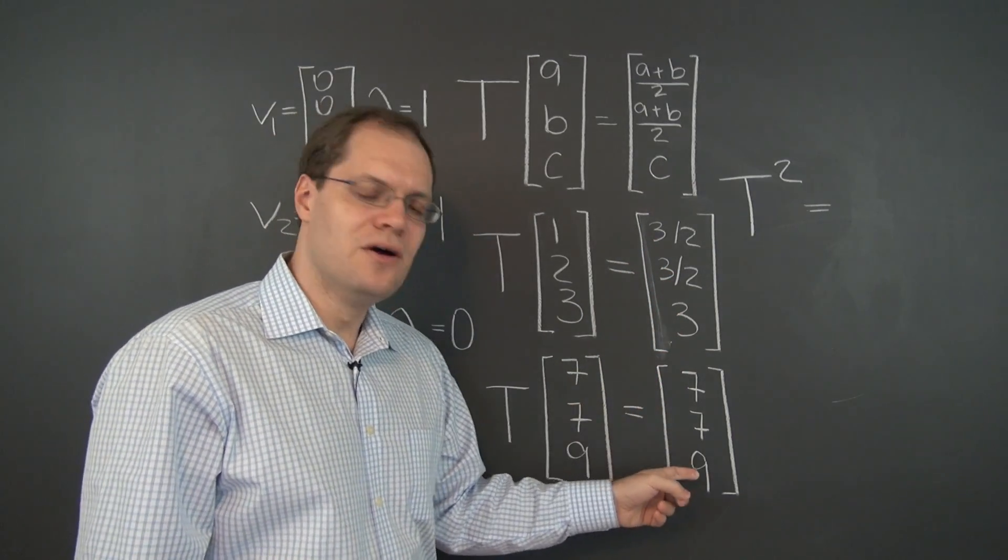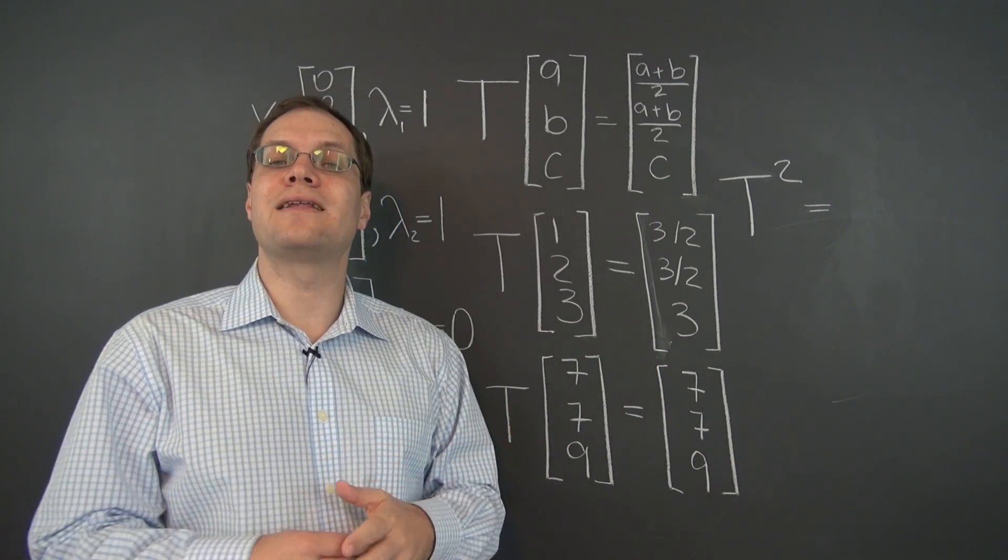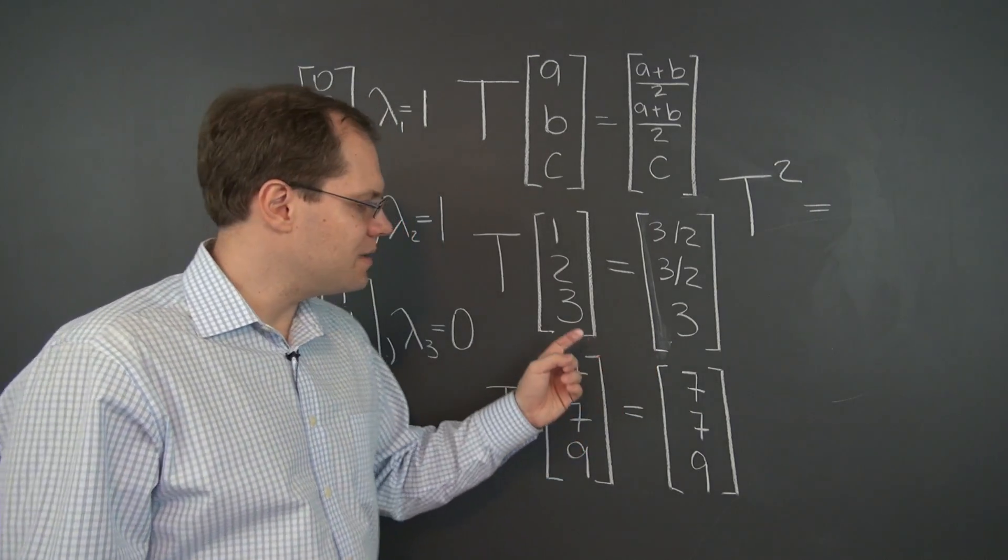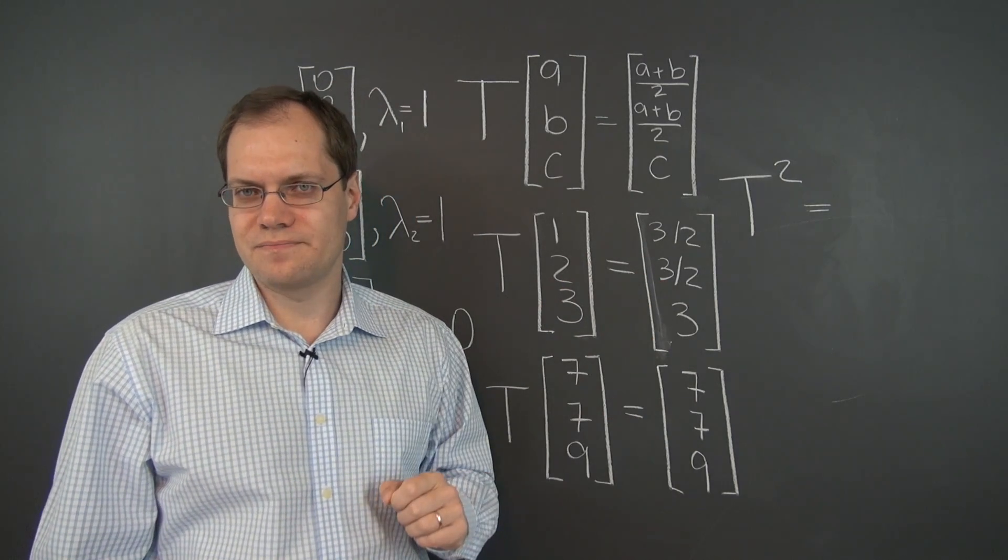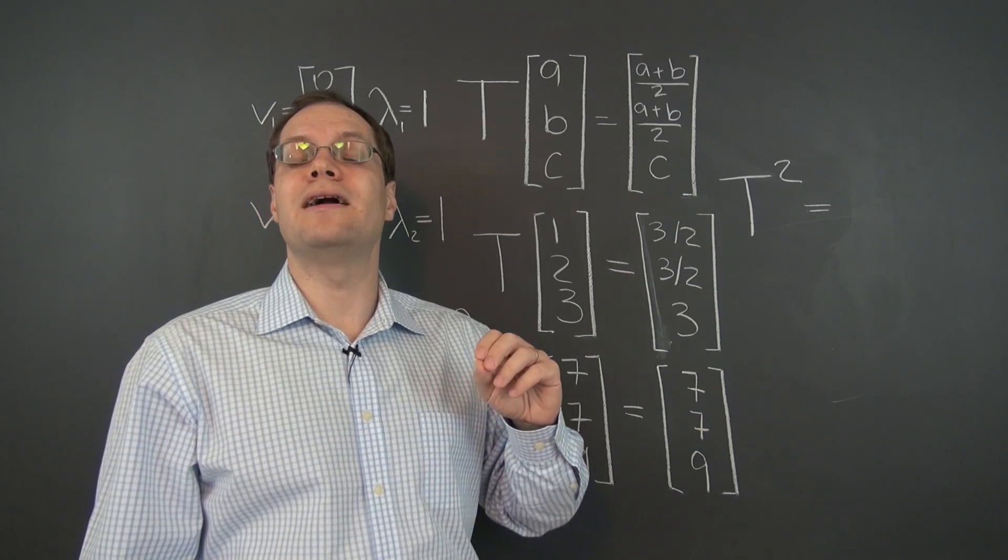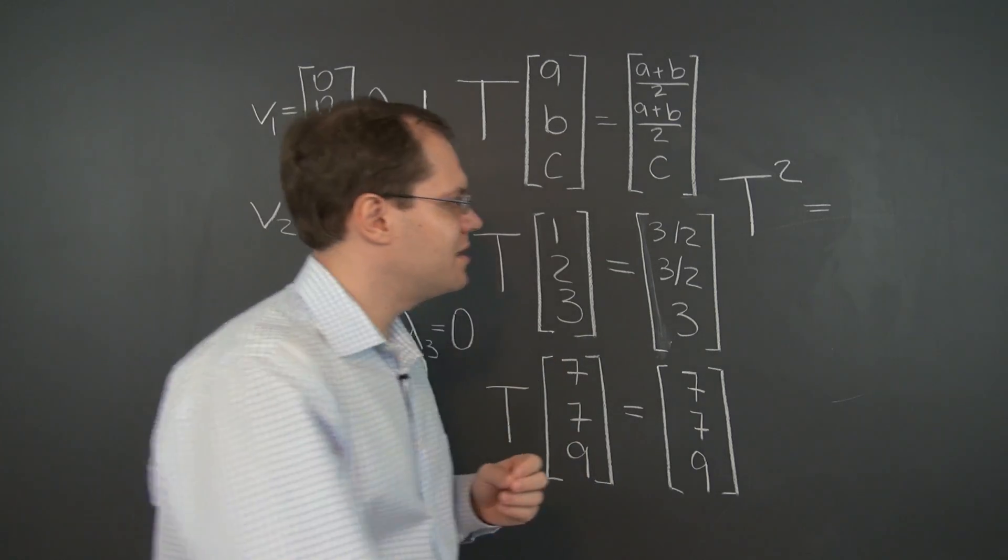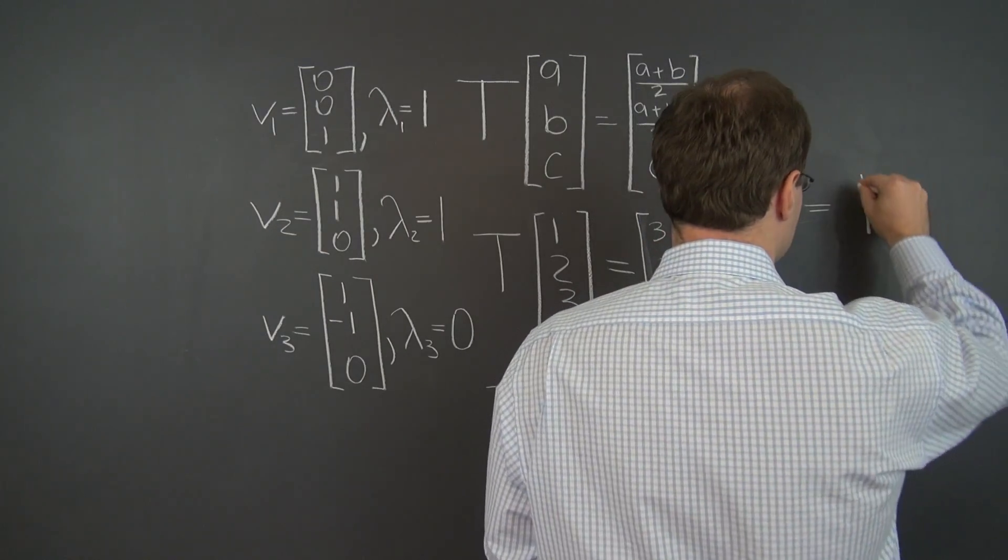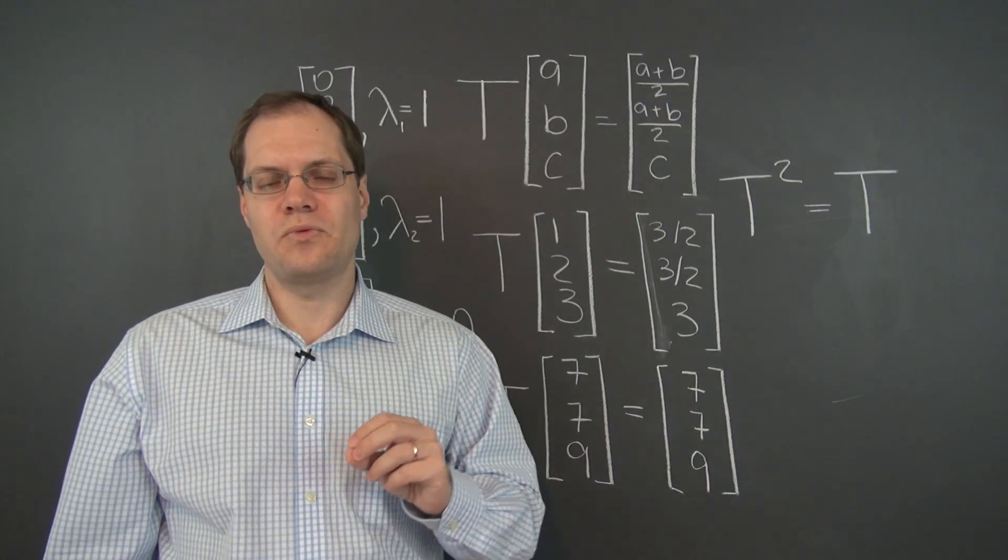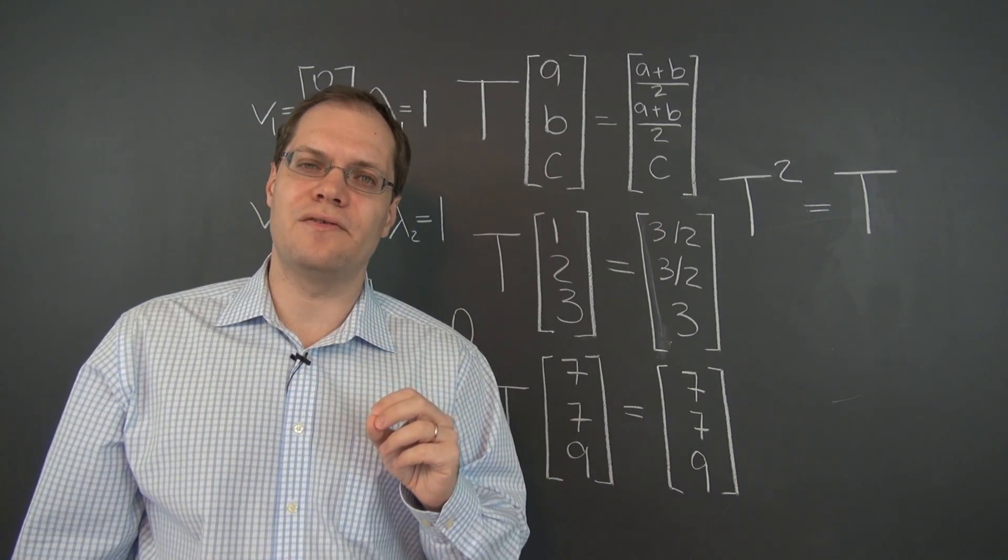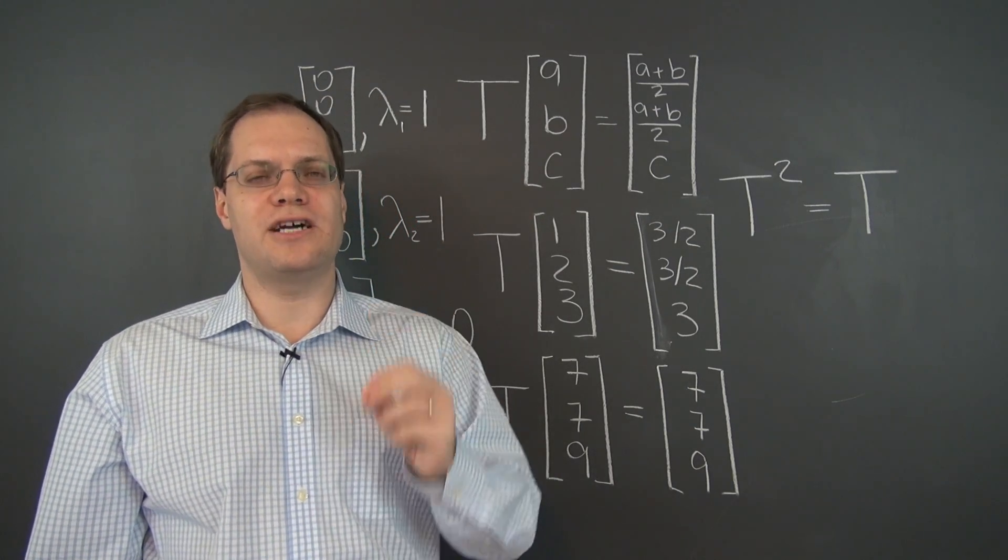And in this case, applying it a second time would still give us this vector back. In fact, in each case, applying this transformation a second time does nothing. So applying this transformation twice is the same as applying this transformation once. And we've seen this somewhere before. We've seen exactly this kind of behavior when we talked about projections.